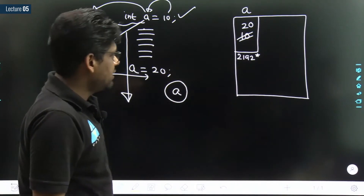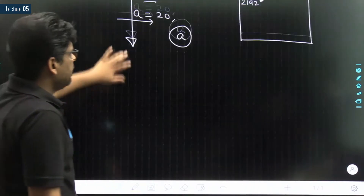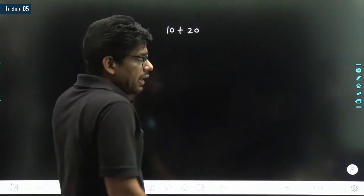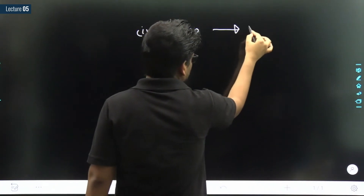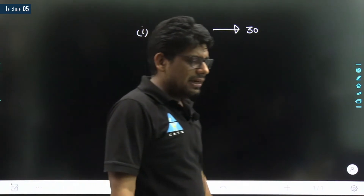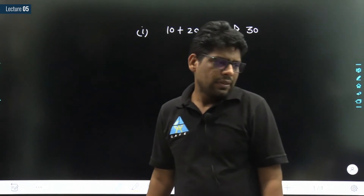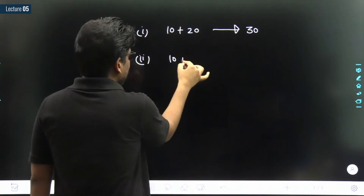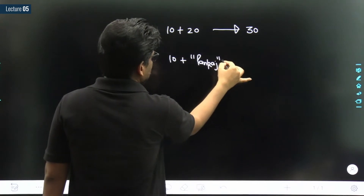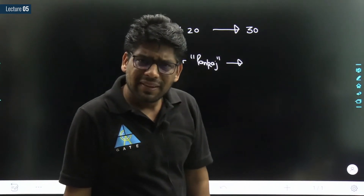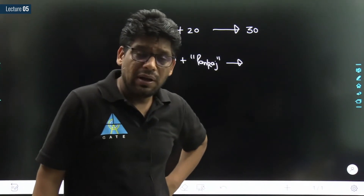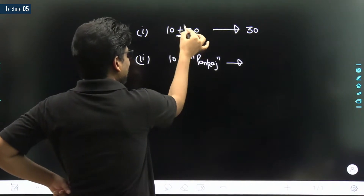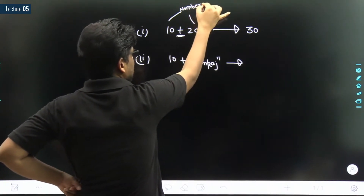Let me give you another example. If I ask you what is 10 plus 20, you will say the answer is 30 — that is so easy. But then I say: what is 10 plus Pankaj? You would say that is the most ridiculous thing — how can you do that? Why? Because addition is defined on numbers, and that is why we can answer 10 + 20. Addition is defined on numbers, and this is a number and this is a number.